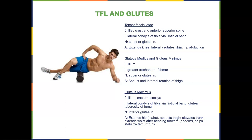The gluteus maximus originates on the ilium, sacrum, and coccyx, inserts into the lateral condyle of the tibia via the IT band and the gluteal tuberosity of the femur, and is innervated by the inferior gluteal nerve. The glute max is probably the most important muscle for stabilization — it extends the hip (like climbing stairs), abducts the thigh, elevates the trunk, and extends the waist after bending forward. Deadlifts are one of the best exercises to work the hamstrings and glutes.